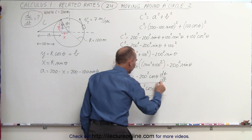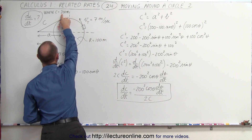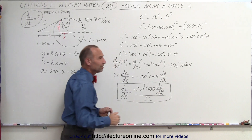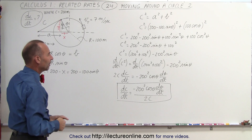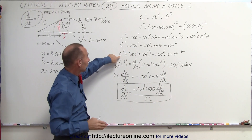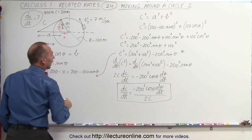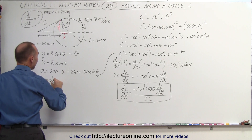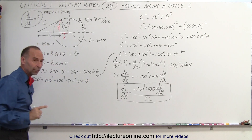Now we plug in what we know. We're told c = 200 meters. We still need the angle theta and dθ/dt. Looking at c² = 200² + 100² − 200²·sin θ with c = 200, we can solve for theta. Setting 200² = 200² + 100² − 200²·sin θ, the 200² terms cancel, leaving −100²/200² = −sin θ, so sin θ = 1/4.